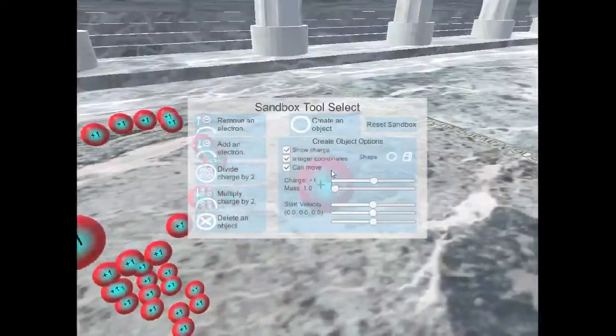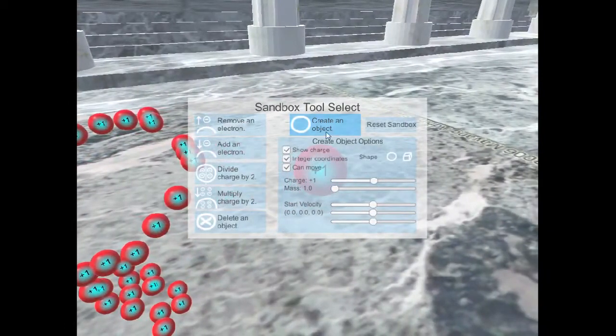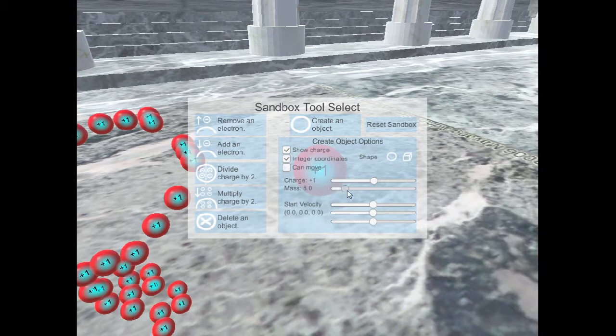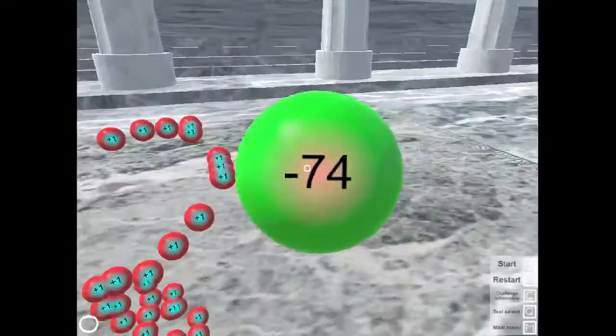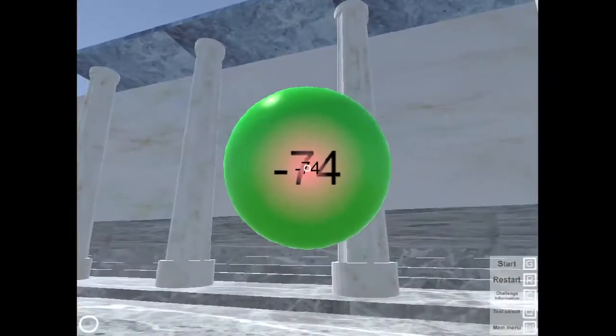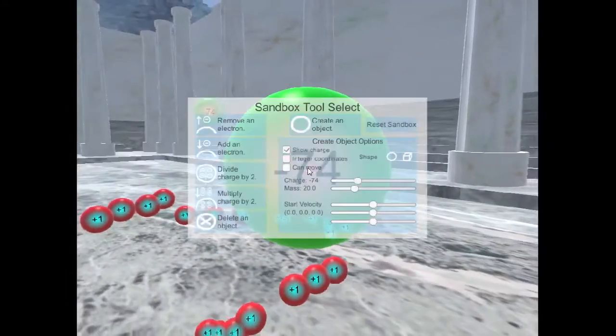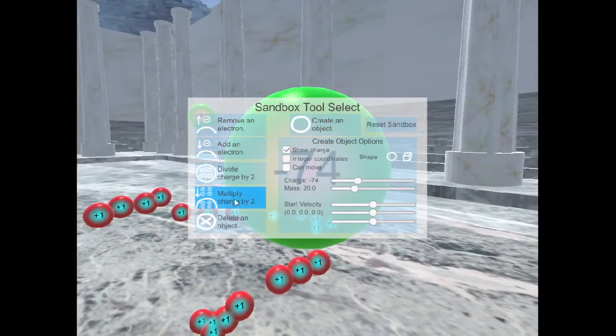It teaches the intuition behind the inverse square law and Coulomb's law, which is basically where opposites attract and like charges repel, and also how distance changes that force. I made this so high school teachers can show their class a cool simulation, and also so their students can play the game and set up their own experiments and see what happens.